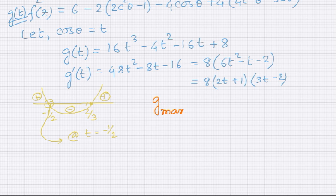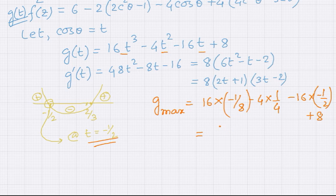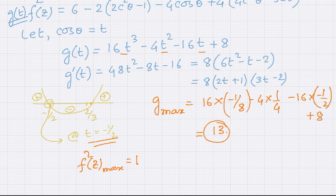There is a local maxima for g(t) at t = −1/2. Substituting t = −1/2 into the function: we get 16(−1/8) minus 4(1/4) minus 16(−1/2) plus 8, which gives 4(1/4) minus 16(−1/2) plus 8, coming out to be 13. So the maximum value of g is 13. Therefore f(z)²_max = 13, which implies that the maximum value of f(z) is √13.